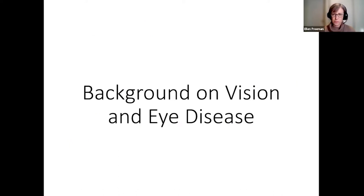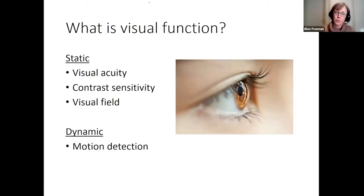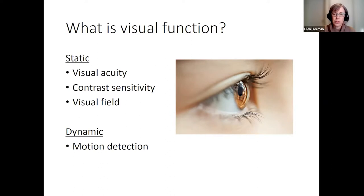Let's start with some background on vision and eye disease. Visual function refers to how well one sees. The most familiar measure is visual acuity, which measures how well you see fine details. It's typically measured using a white chart with dark black letters that get progressively smaller as you go down the chart.